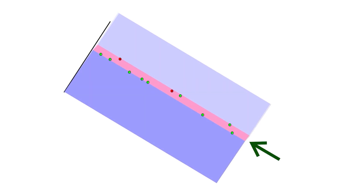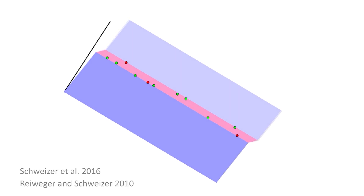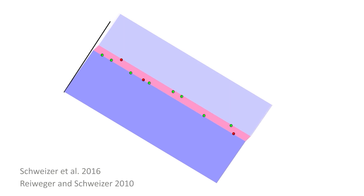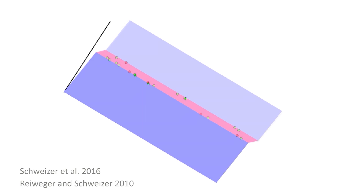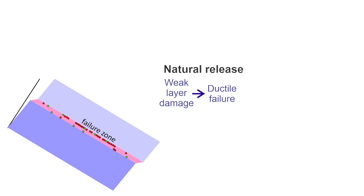Weak layers creep faster than the slab or layer below the weak layer. When snow deforms, bonds break, shown by red dots, and new bonds form, shown by green dots. In the weak layer, the deformation as well as the breaking and forming of bonds is concentrated at the upper and lower boundaries of the weak layer, adjacent to the stiffer layers. For a natural slab avalanche, there must be more bonds breaking than forming, and in places, the breaking bonds will be close to one another. If the shear component of creep is fast enough, the damaged area will grow into a ductile failure zone, traditionally called a deficit zone.